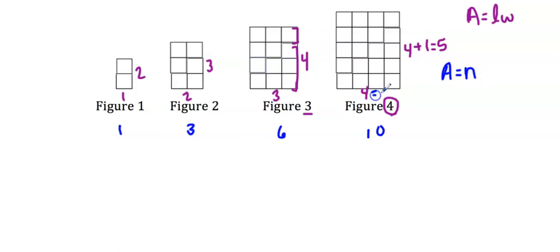To get my explicit equation, I have area equals length times width. So one dimension was the exact same thing as the figure number, so I'll say n. This is the same thing as n. This one is n plus one. So I have the length times the width, which is n times (n+1). Now we just have to be careful here because this gives me the area of twice the figure, but I only want the area of half of that.